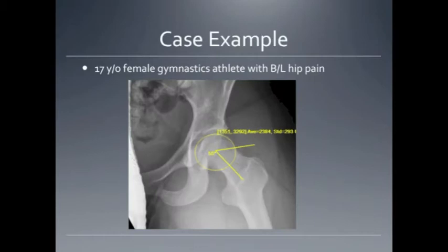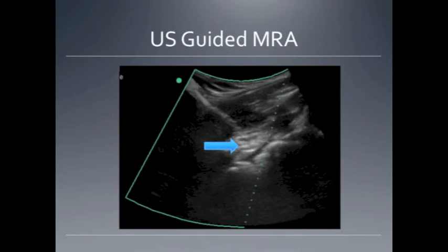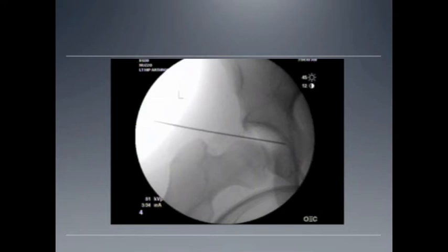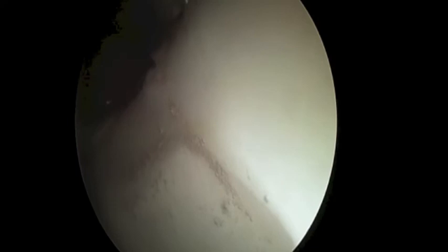In this case example, this is a 17-year-old female who has had impingement and hip pain. An ultrasound-guided MRI was performed in our office and identified a substantial labrum tear in the hip. She was taken to surgery to repair the tear. This is just an example of fluoroscopic guidance to enter the hip, and these are our videos from our intraoperative procedure.